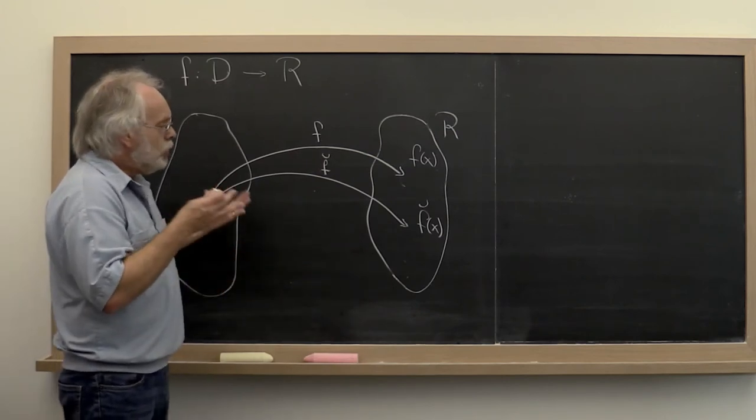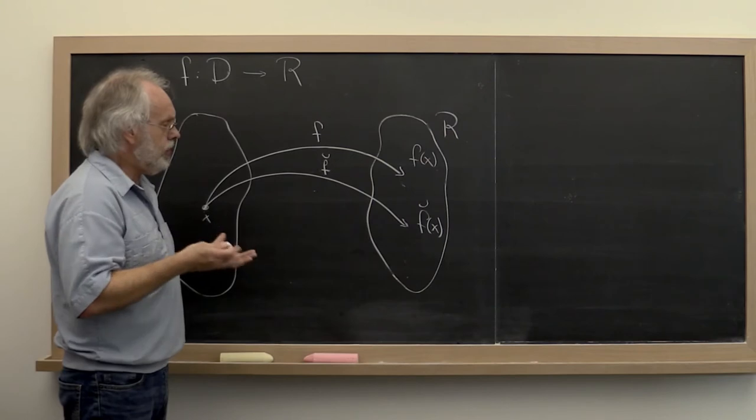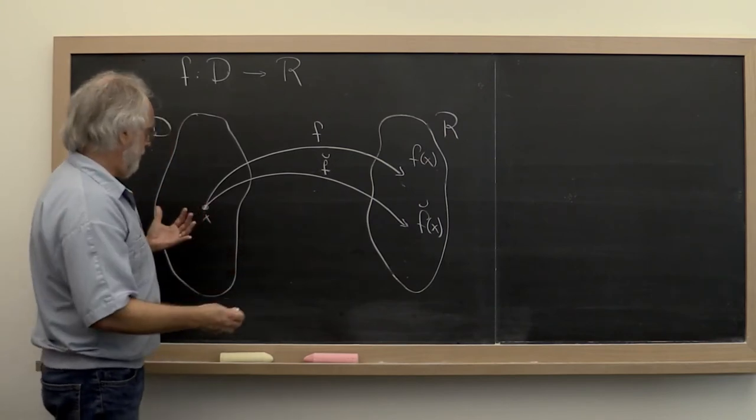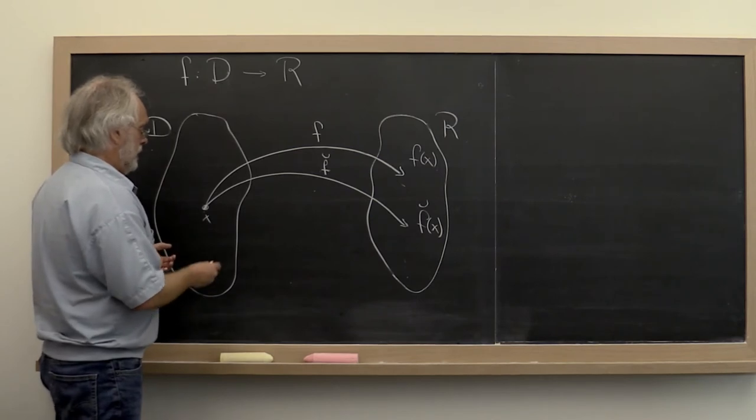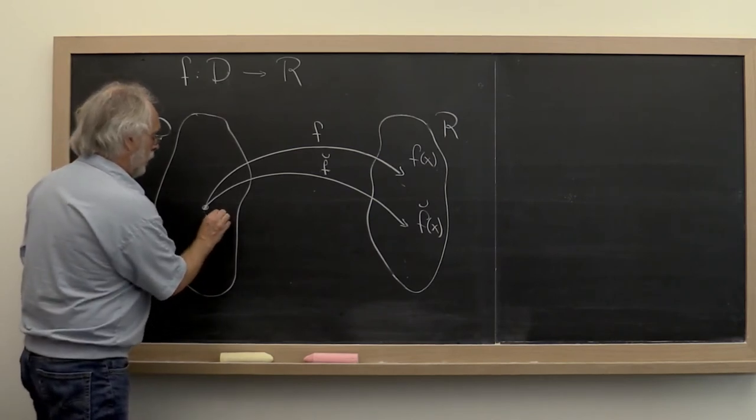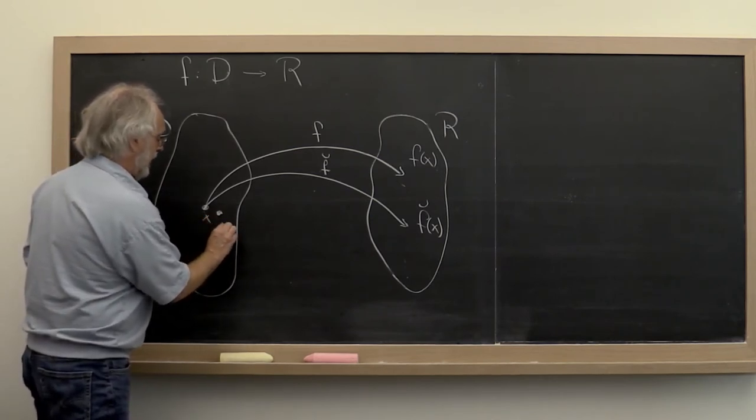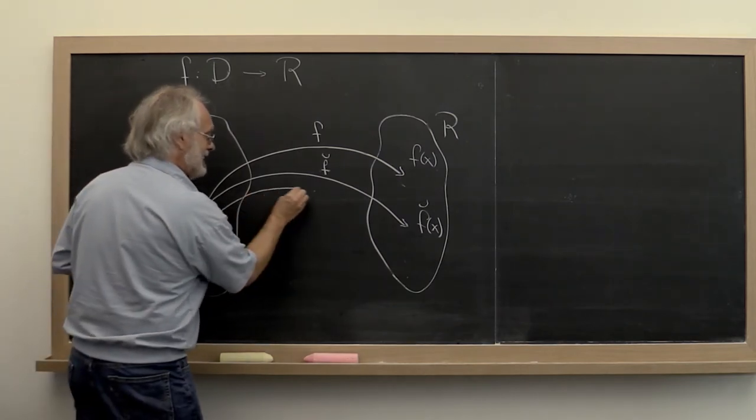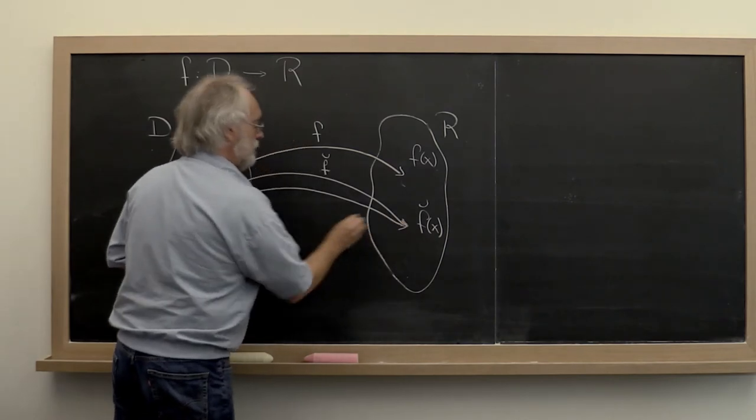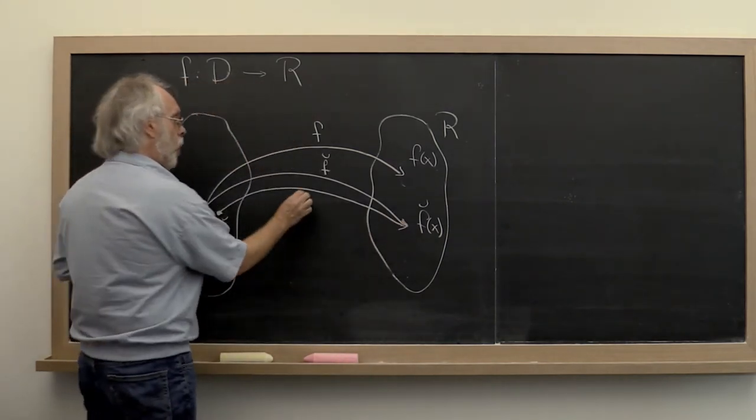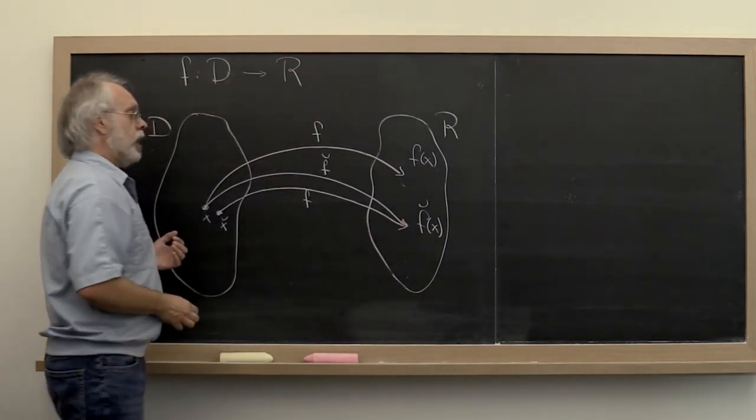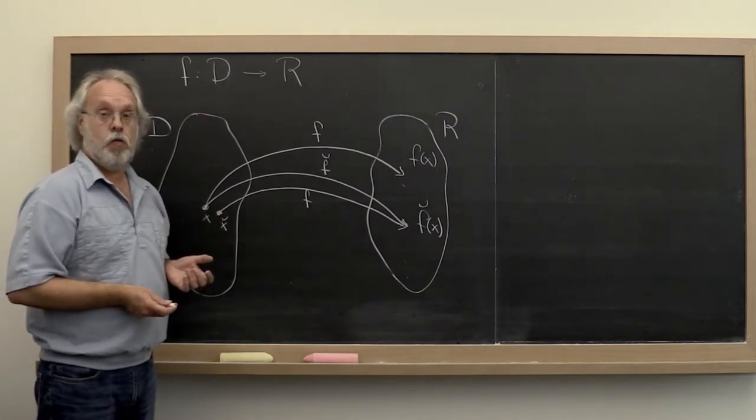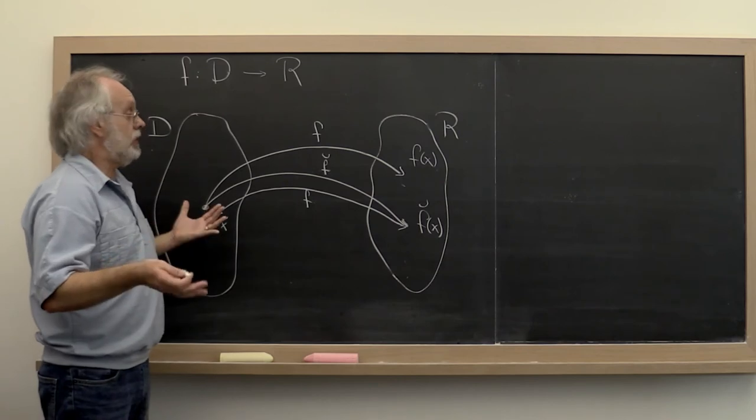So how do we quantify that we have a good implementation? Well, if we can show that for a value close to x, let's call it x check, we actually get the exact same value as our computer implementation did, when we map it under our original function f, then we know we're doing about as well as we can.